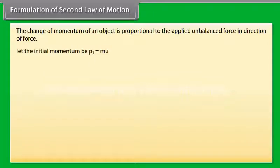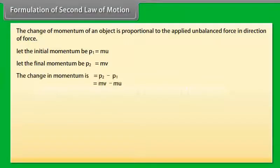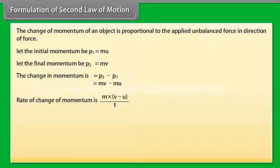Let the initial momentum be P1 which equals MU. The change in momentum is P2 minus P1 which equals MV minus MU. Rate of change of momentum is M × (V - U) / T. Force equals K × M × (V - U) / T, which equals KMA, where K is the proportionality constant.